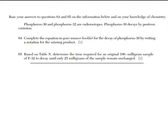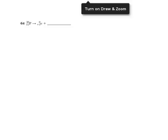All righty, here are the last two questions in part B-2. We have phosphorus-30 and phosphorus-32, and they're radioisotopes. And phosphorus-30, we're told, decays by positron emission. For 64, complete the equation in your answer booklet for the decay of phosphorus-30 by writing a notation for the missing product. Here is the nuclear reaction from the answer booklet. We have phosphorus-30 undergoing positron decay. And we're going to go ahead and put our answer in this blank. Well, remember, when you balance nuclear equations, you have your mass numbers on either side that have to add up to the same, and your atomic numbers on either side that have to add up to the same. In other words, you can think of the arrow as an equal sign.